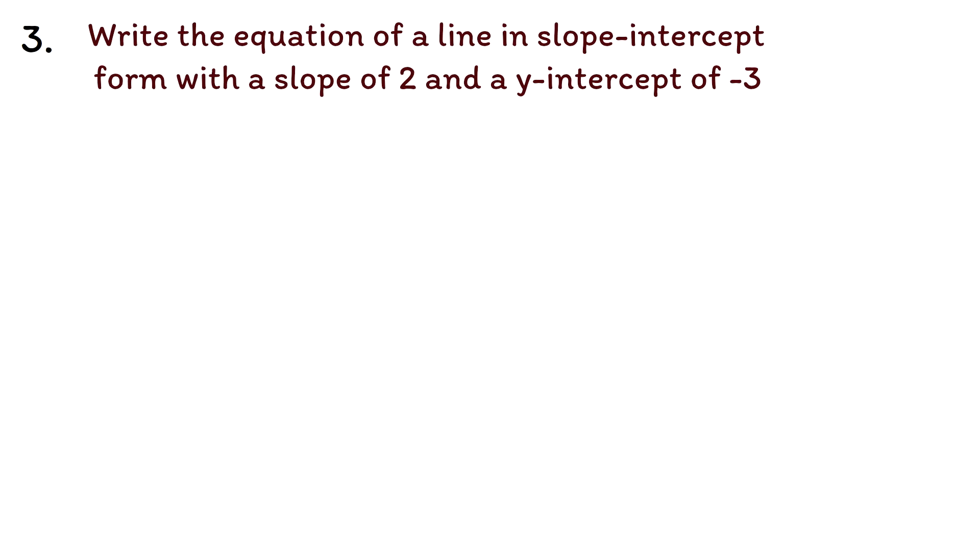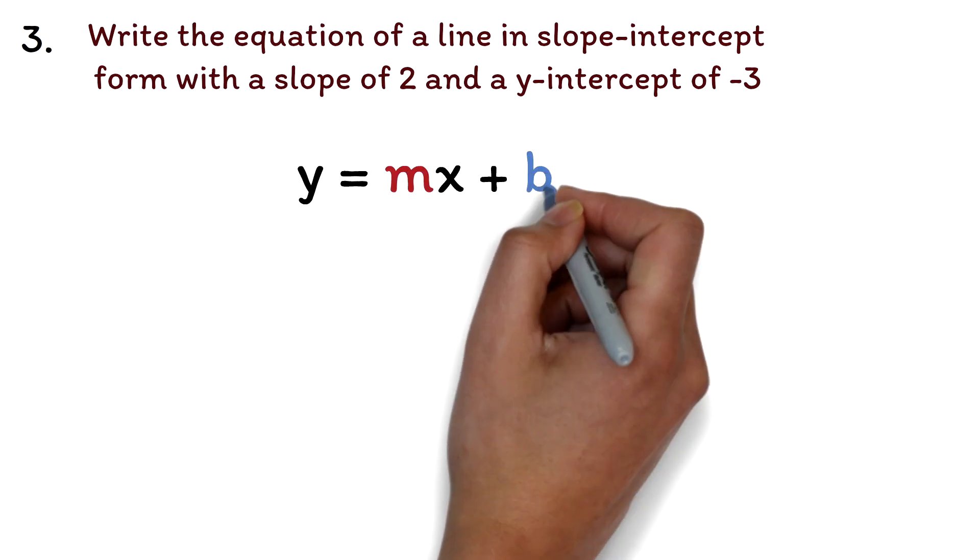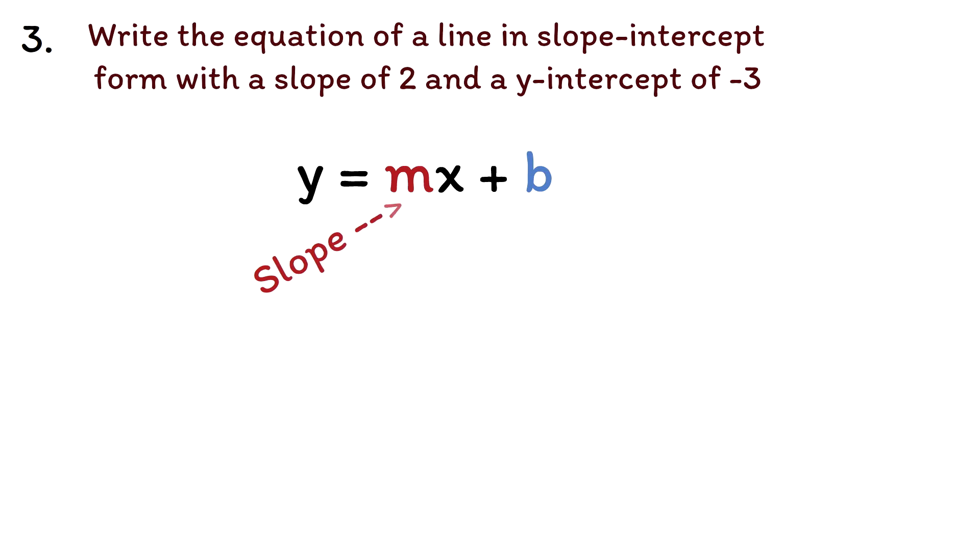Question 3. Write the equation of a line in slope-intercept form with a slope of 2 and a y-intercept of negative 3. This is another question that is super easy to solve once you know that the formula is given to you on the GED formula sheet. The slope-intercept form of a linear equation is y equals mx plus b.